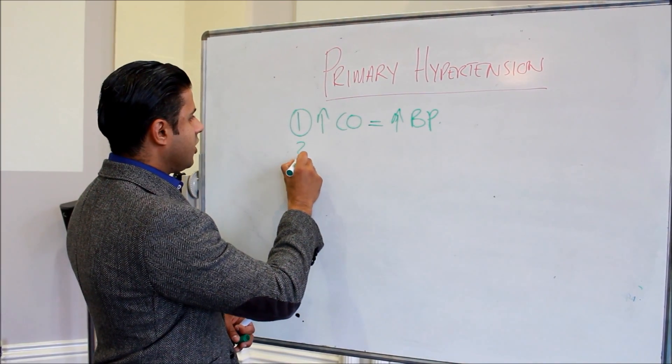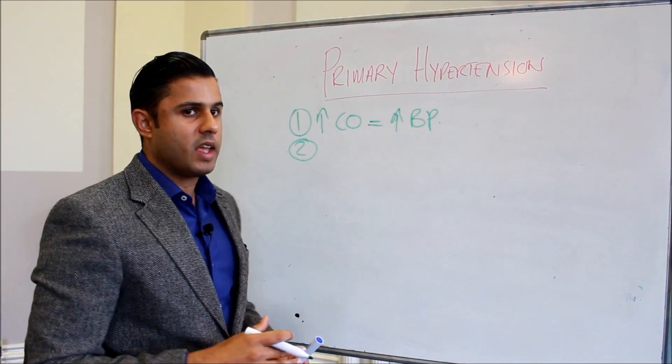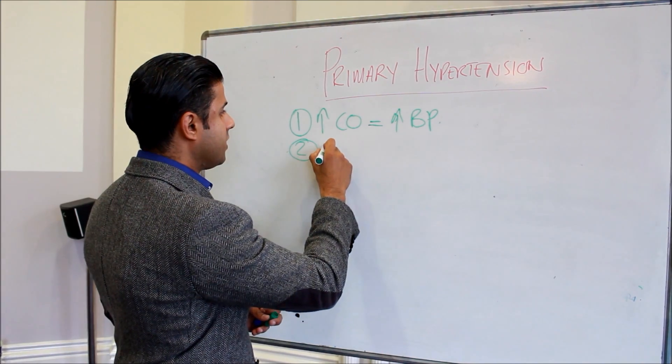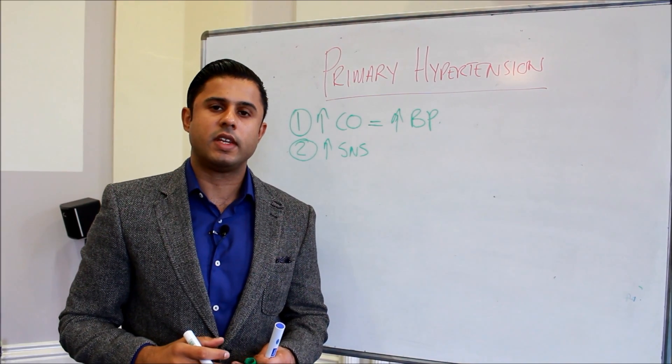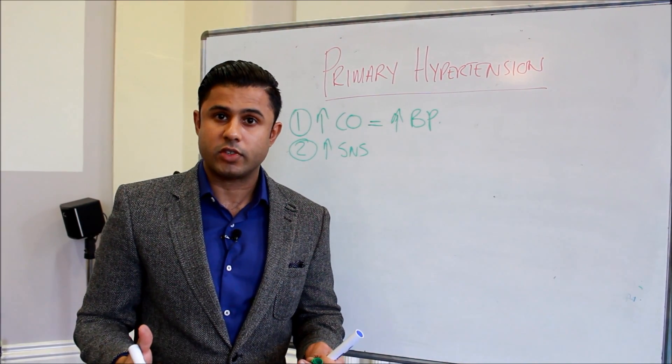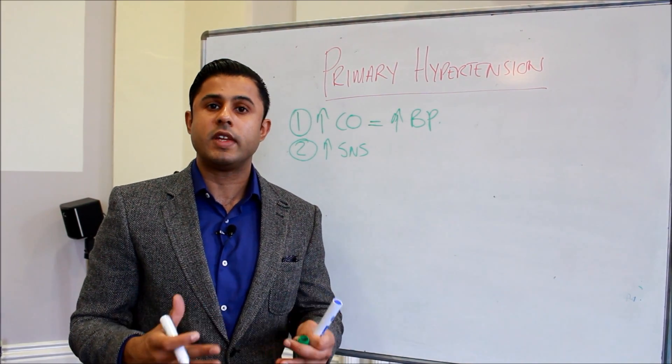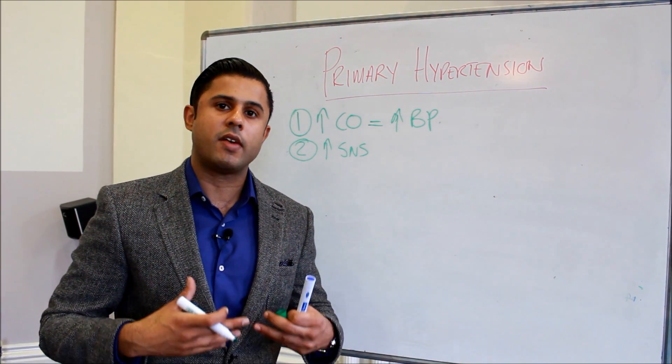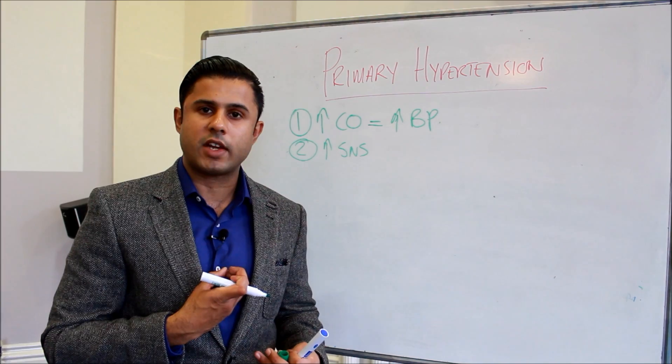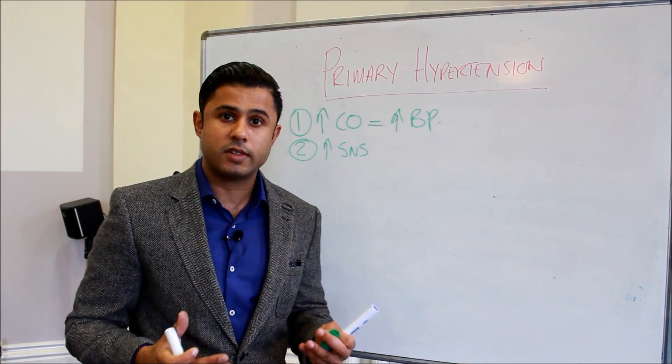The second change is an increase in sympathetic nervous system activity. In general, sympathetic nervous system activity causes vasoconstriction, so you then get an increase in total peripheral resistance, and again you have to have a greater force of contraction by the left ventricle, so the heart is working harder.